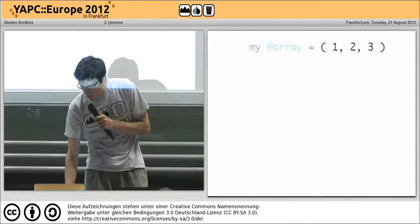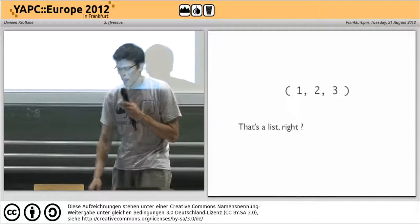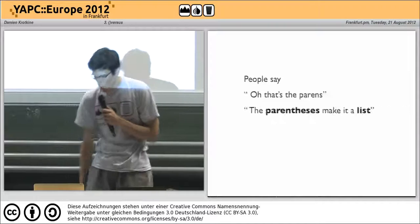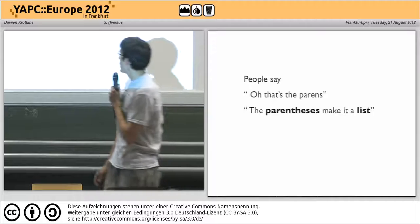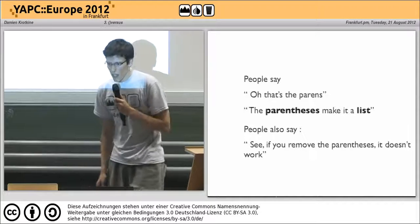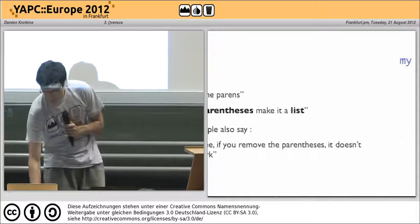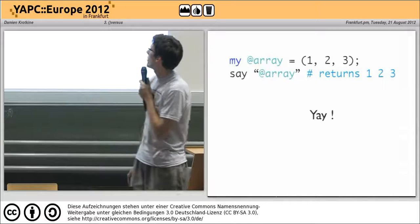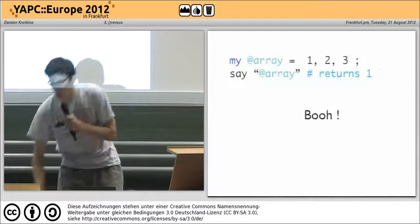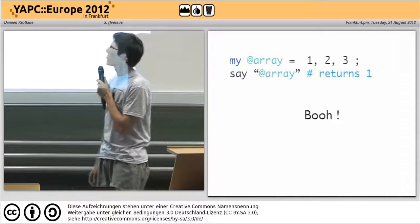So we have this array. That's the list, right? But what makes it a list? People say, oh, that's the parens — the parentheses make it a list. People also say: if you remove the parentheses, it doesn't work. My array with parens containing 1, 2, 3 — say array returns 1, 2, 3. My array without the parens, say array returns only 1. Boo.